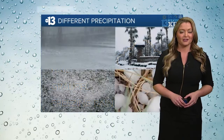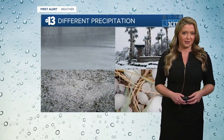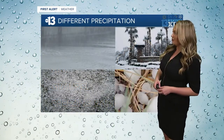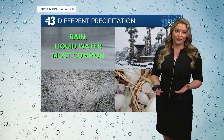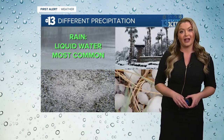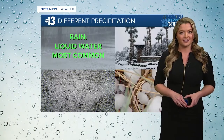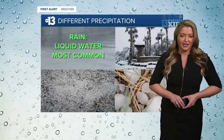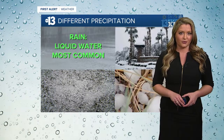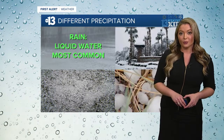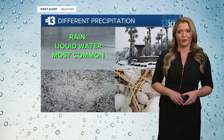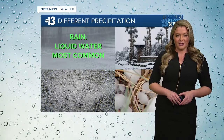Today, we're going to focus on the four most common types of precipitation. First, one that we're all pretty familiar with: rain. Rain happens when the water vapor in a cloud condenses and gets so heavy that it falls from the sky and travels through air that is warmer than freezing, allowing the droplet to remain liquid before hitting the ground.